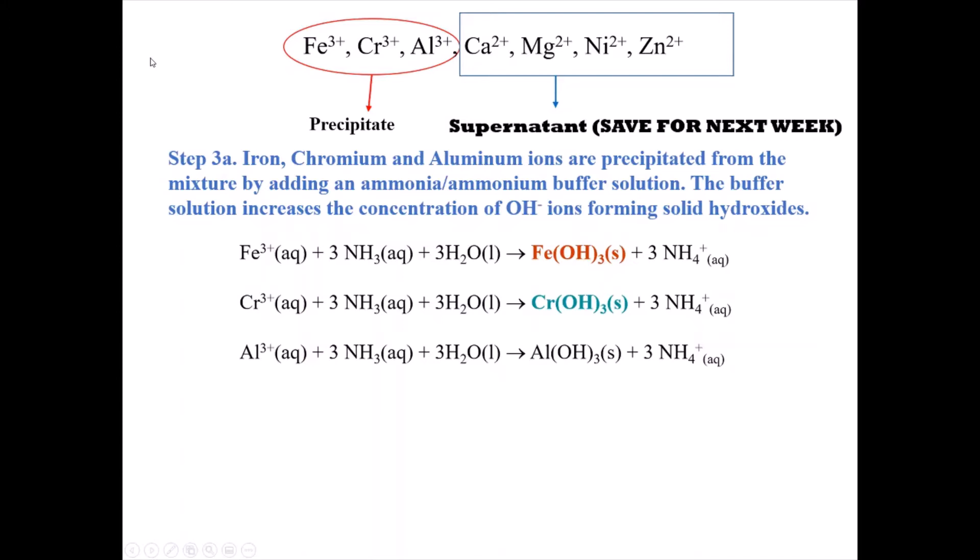Step three is where we start to separate the two main groups of ions. We have iron, chromium, and aluminum in one group, and calcium, magnesium, nickel, and zinc in the other. In step three, we're going to separate iron, chromium, and aluminum from calcium, magnesium, nickel, and zinc.